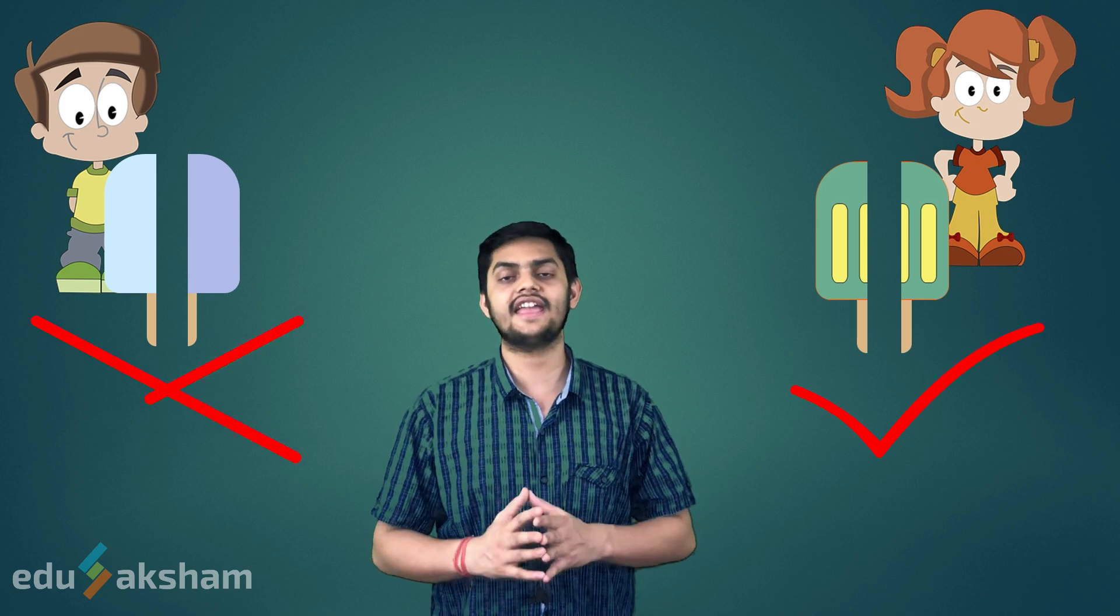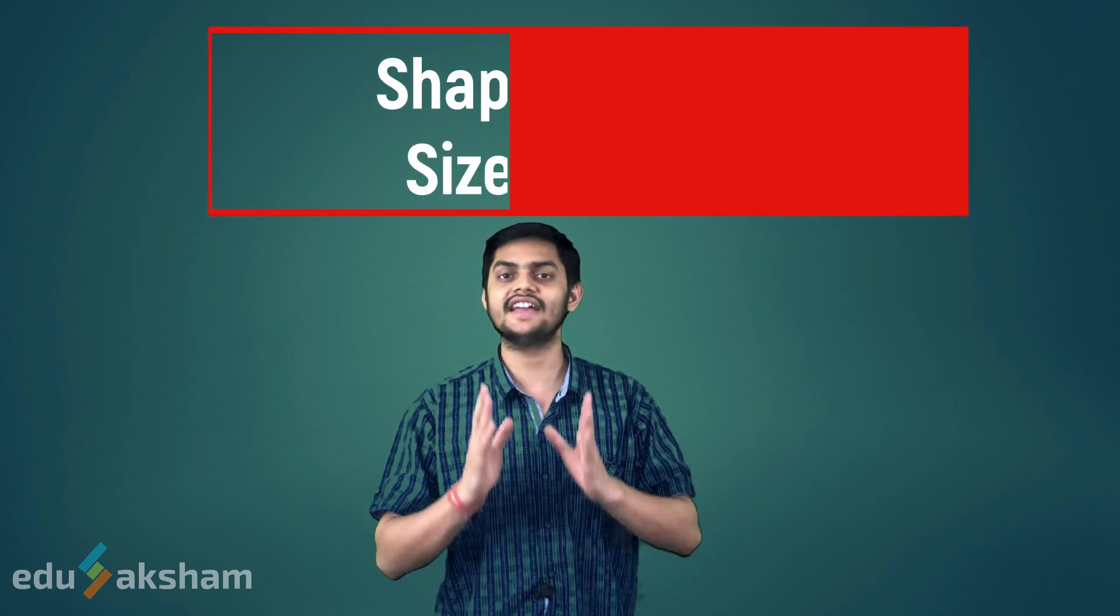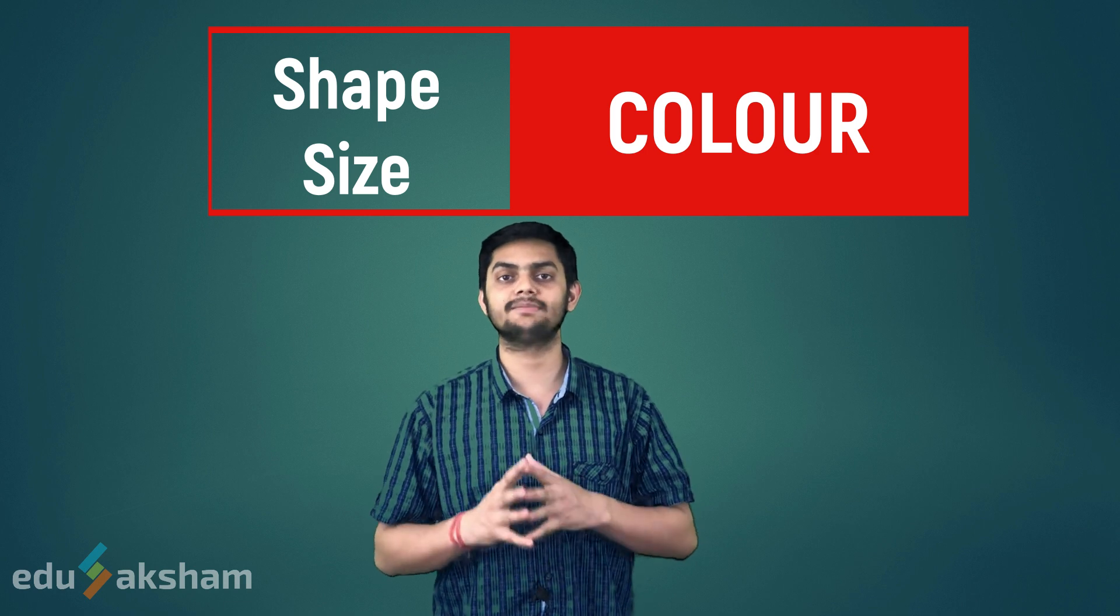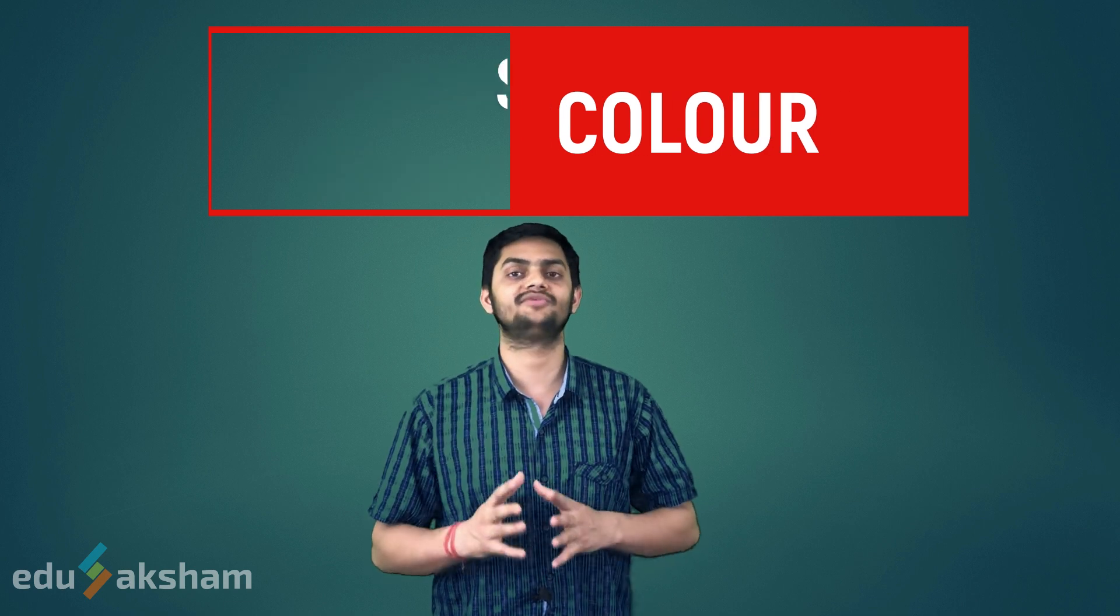What did we learn here? Besides shape and size, symmetry also depends upon the color of the object.